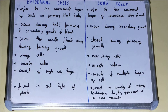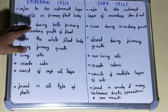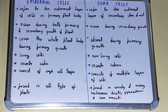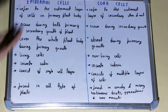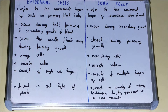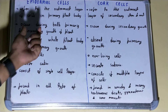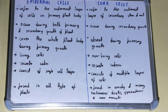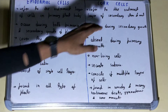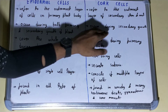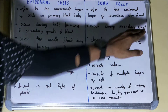Epidermal cells occur during both primary and secondary growth of plants. Cork cells, however, only occur during the secondary growth of the plant.